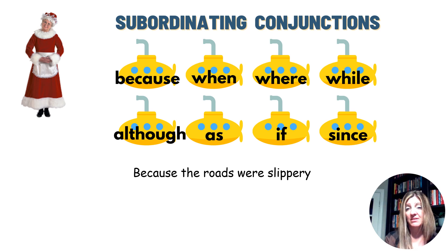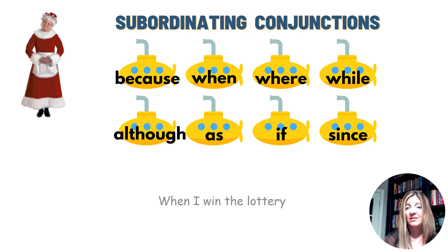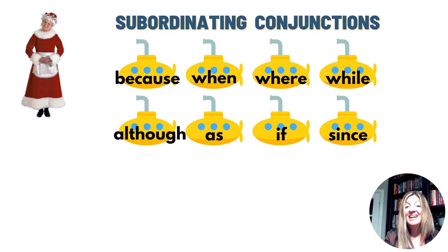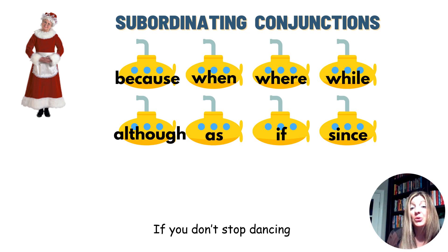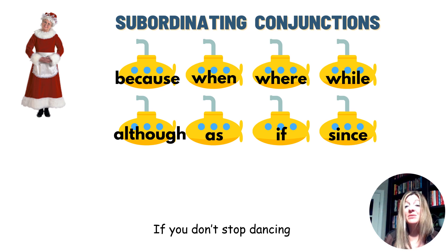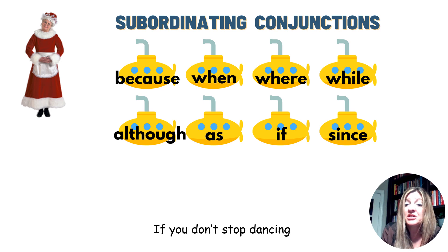'Because the roads were slippery.' 'When I win the lottery.' What? When you win the lottery — what? 'If you don't stop dancing.' These are still clauses — they have a subject and a predicate. Who doesn't stop dancing? You — subject. What do you do? You don't stop dancing — predicate. So it still has a subject and predicate, but it's not complete because the subordinating conjunction makes it depend on something else.